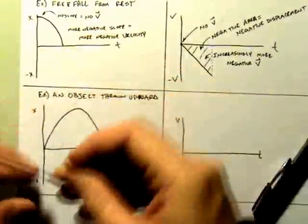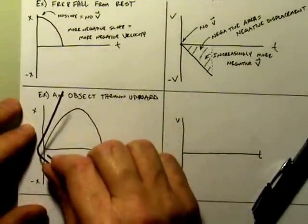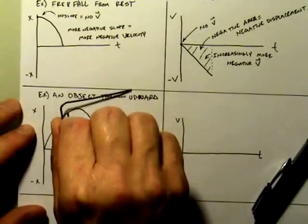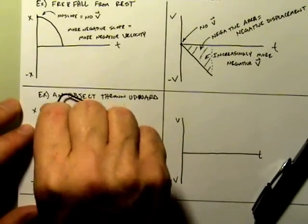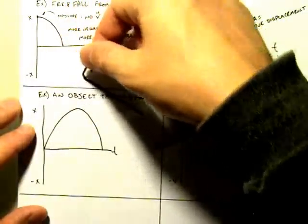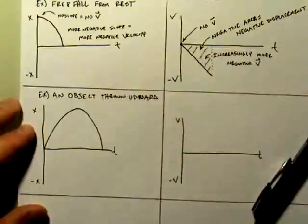Okay, so object thrown up with positive velocity, constantly feels the acceleration of gravity, which is constantly changing it, not only to the point where it's zero, but then continues into the negative direction over here.